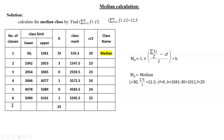Applying the median formula: L = 30, Σf/2 = 12.5, cf = 0 (no class precedes the median class), h = 1041 − 30 = 1011, and f = 20. Substituting these values into the formula gives a median of 661.87.